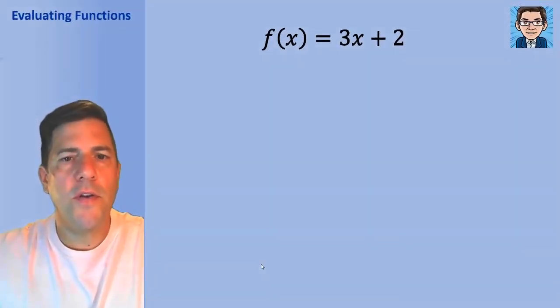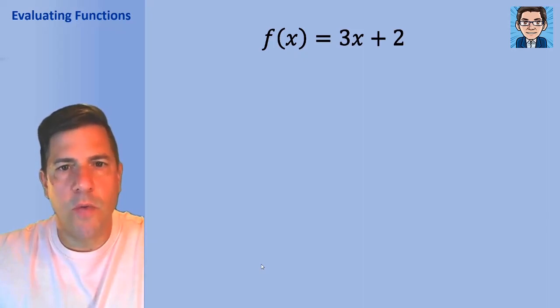In function notation, this is read f of x equals 3x plus 2. We're not multiplying the f and the x. Usually when we have two things next to each other, we're multiplying them together, but f simply names the function and x is the variable we're putting into the function. So x is the input, f is the name.